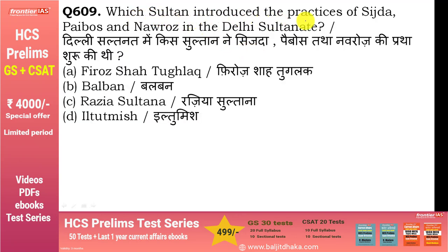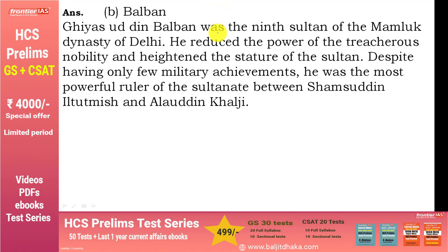Which Sultan introduced the practices of Sijda, Paibos and Navroz in the Delhi Sultanate? Answer है Ghiyasuddin Balban। Balban slave dynasty का 9th Sultan था। Balban पहले 40 nobles के उस group का हिस्सा था जो सबसे powerful rulers में थे। Iltutmish और Alauddin के बीच के period में इनका काफी important role था।